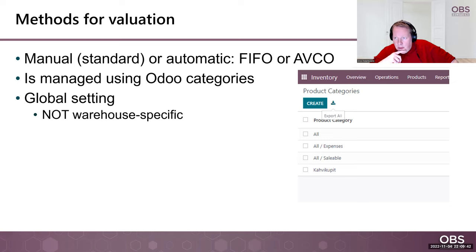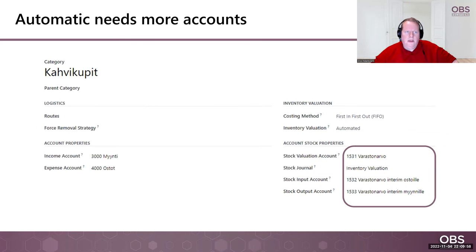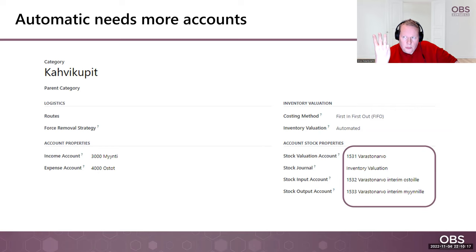Essentially, what we need to do is create one new category and assign products to it, or alternatively use all categories. If you try to do this in Odoo, you typically encounter an error, because Odoo does not come with a predetermined set of accounts for inventory valuation. In order to set it up, you have to add three different accounts: number one is the inventory value, number two is the stock input account, and number three is the stock output account. The stock input and stock outputs are interim accounts, and they all go through the inventory valuation journal.